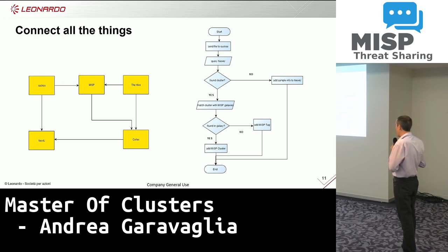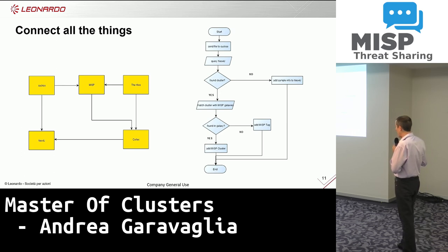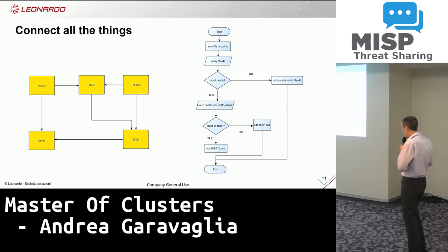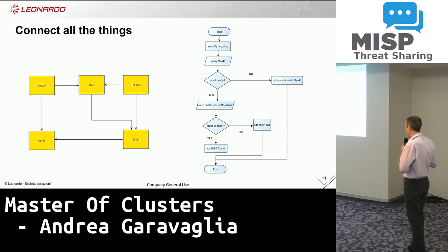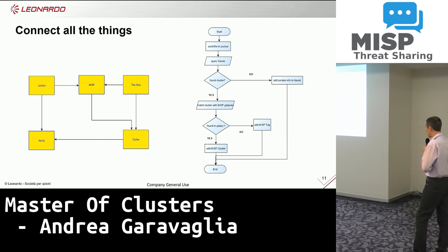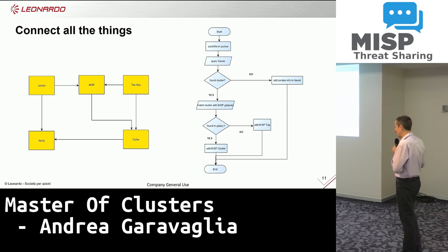For a manual analysis, you can upload the malware sample in TheHive and through Cortex query the Neo4j database. If the result is positive, write inside TheHive and then it's possible to write back to MISP. Basically, if the sample's ImpFuzzy value is found in the database, write the MISP galaxy if it's present. If it's not present in the galaxy, just add a tag to not lose the value found in the database.